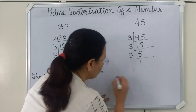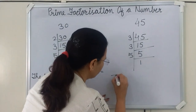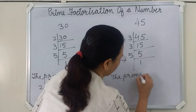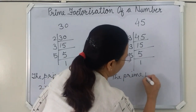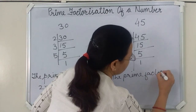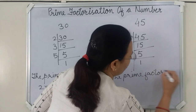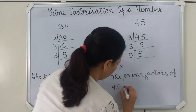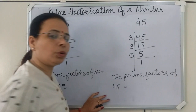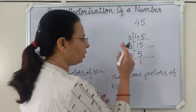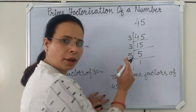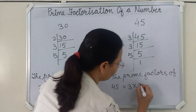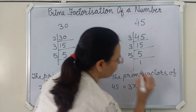Now tell me, the prime factors of 45 are equal to what? 3, 3, and 5. That is 3 × 3 × 5.